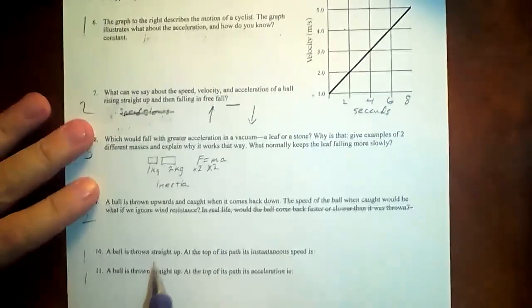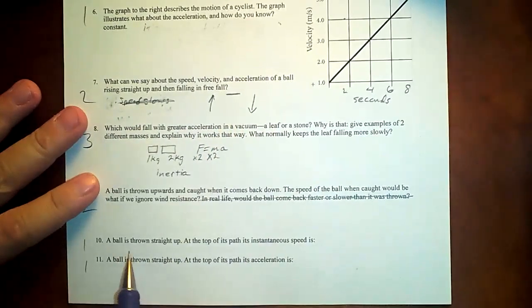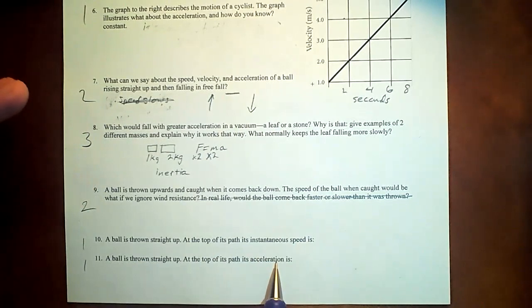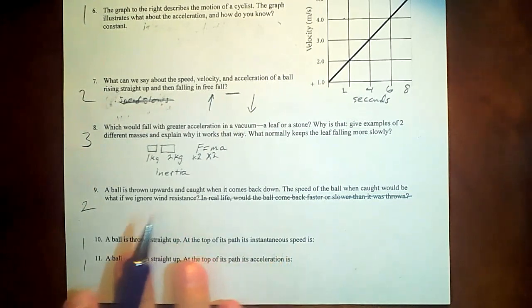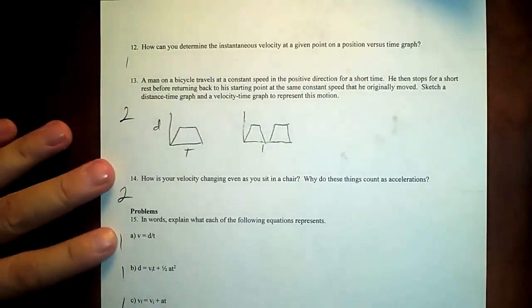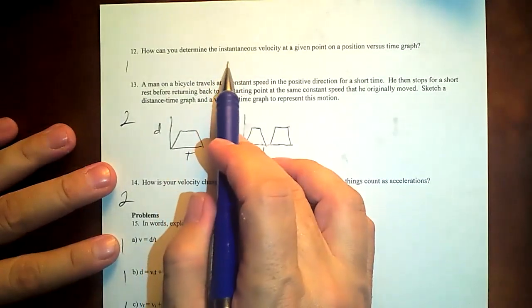We kind of answered this up here. A ball is thrown straight up. At the top of its path, its instantaneous speed is zero and the acceleration is zero. If it's having speed, then it's not changing its speed or direction. If it has no speed, so the acceleration is zero. Almost no one got this right.